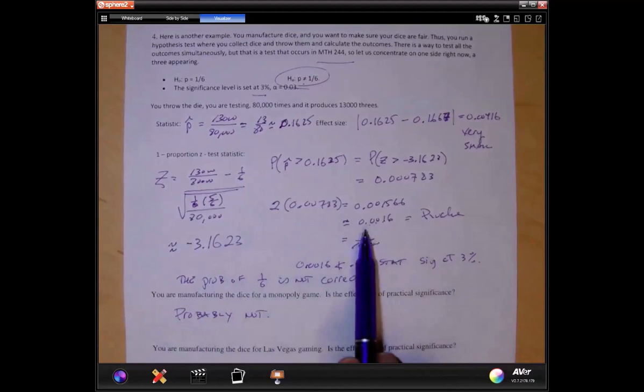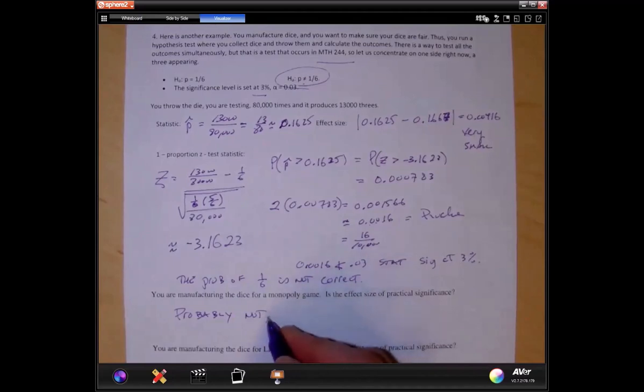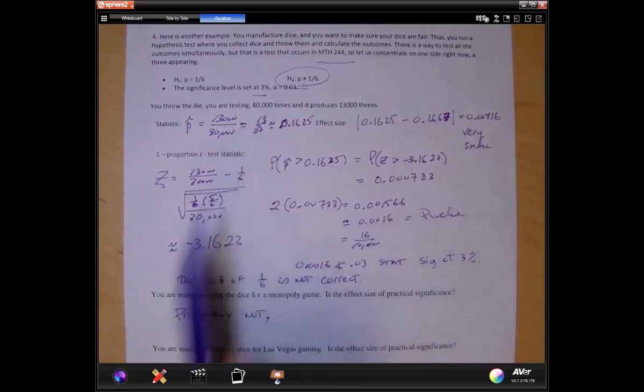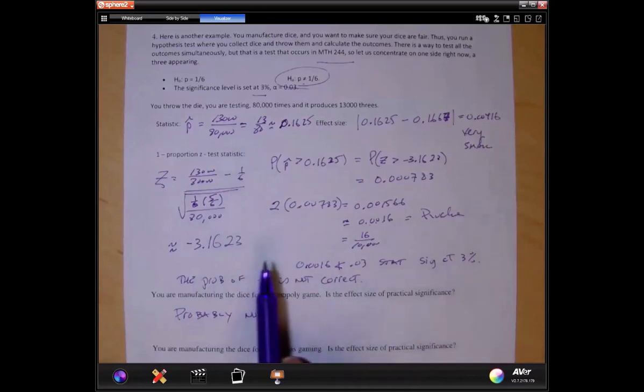Now we know that the die is not exactly a fair die. It's off a little bit. But is that a practical significance for a monopoly game? Probably not. Are you going to notice an occurrence of 16 in 10,000 throws in a monopoly game? No. So for a monopoly game, I'm going to say no, we don't really care. So even though this is not exactly 1/6, for practical purposes, it is like 1/6. Even though statistically, we came to the conclusion that it's not exactly 1/6, it's a little bit off.